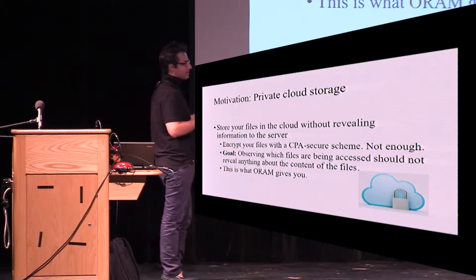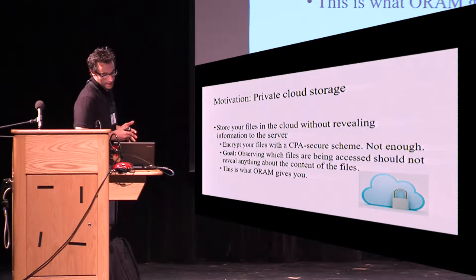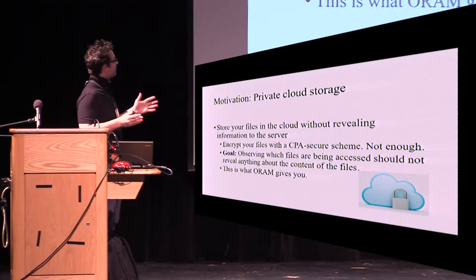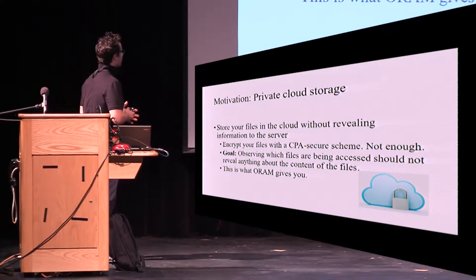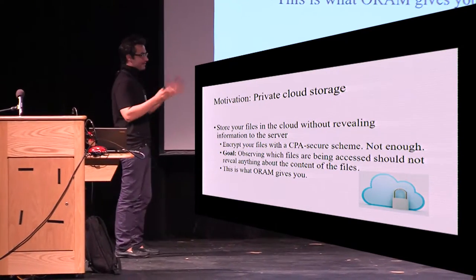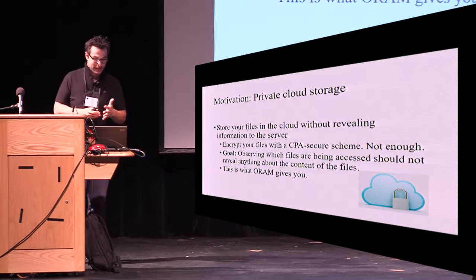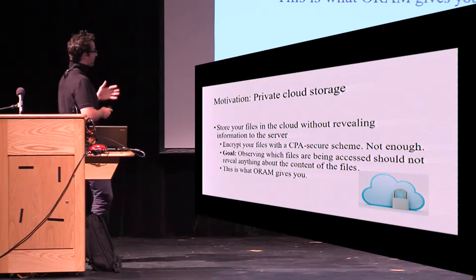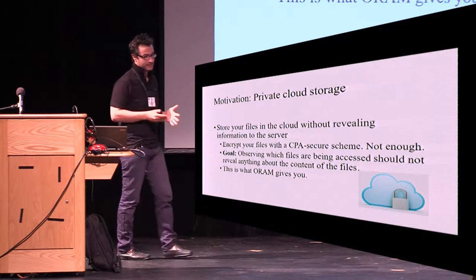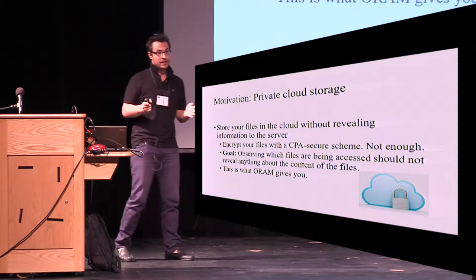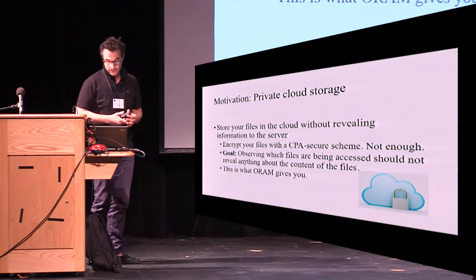We want to achieve a more ambitious goal. If we observe which files are being accessed, this shouldn't reveal anything about the contents of the file. So we'd like to hide the access pattern — which files are being accessed. And this is what oblivious RAM gives you. Oblivious RAM is a way to access a collection of files such that the access pattern is not revealed.